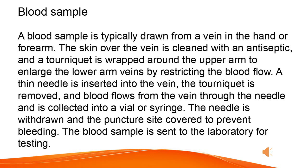Blood Sample: A blood sample is typically drawn from a vein in the hand or forearm. The skin over the vein is cleaned with an antiseptic, and a tourniquet is wrapped around the upper arm to enlarge the lower arm veins by restricting blood flow. A thin needle is inserted into the vein, the tourniquet is removed, and blood flows through the needle into a vial or syringe. The needle is withdrawn and the puncture site covered to prevent bleeding. The blood sample is sent to the laboratory for testing.